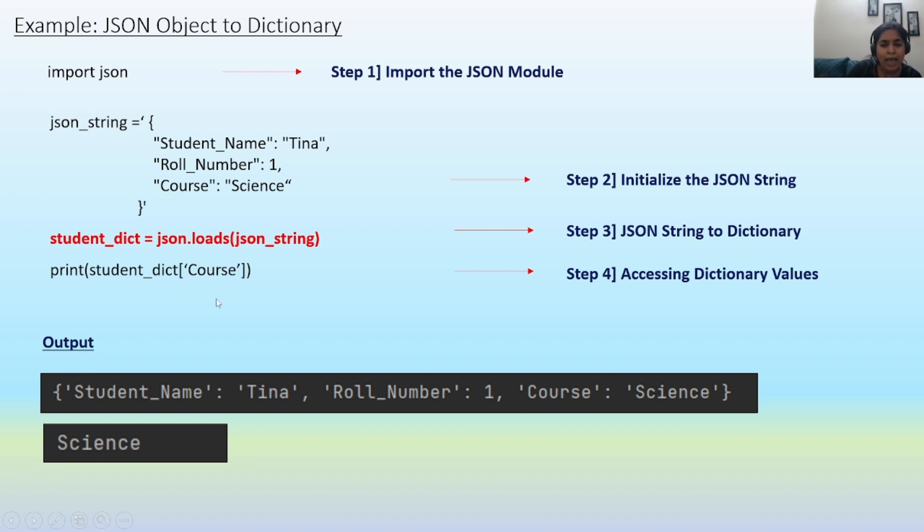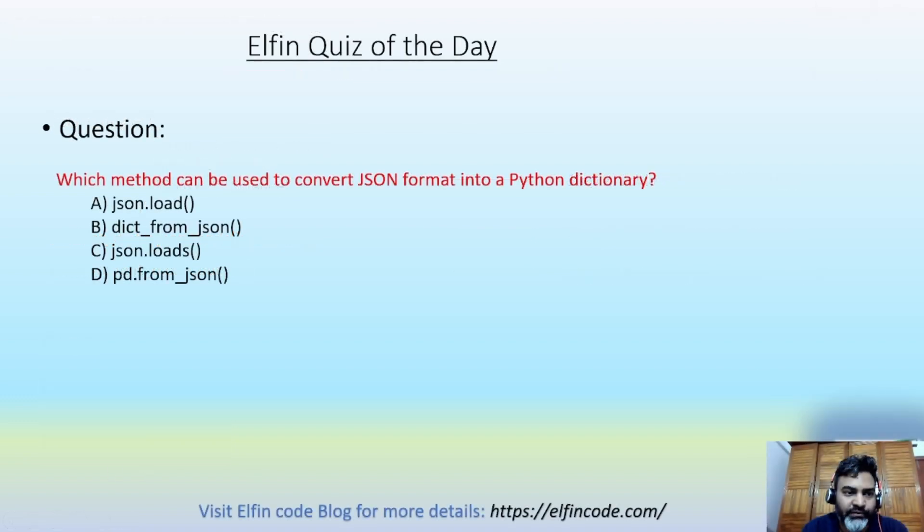You can access the values of this dictionary by mentioning the respective key. So student_dict['Course'] is going to give the output as Science.